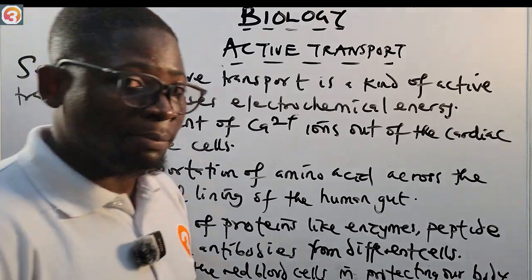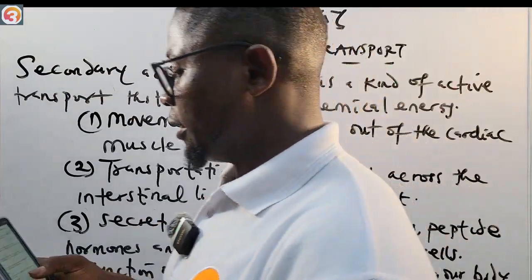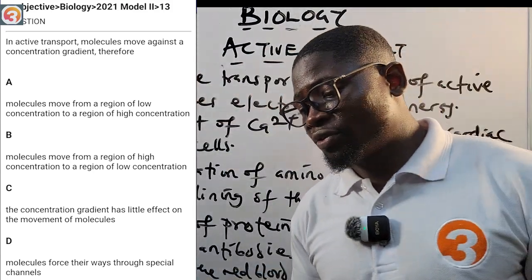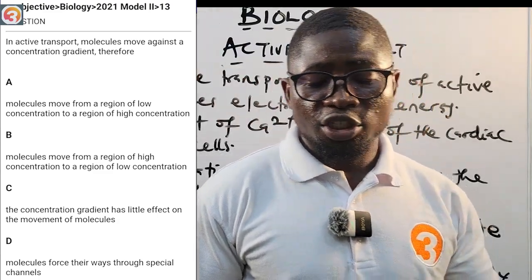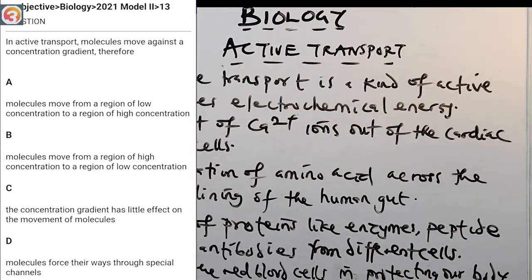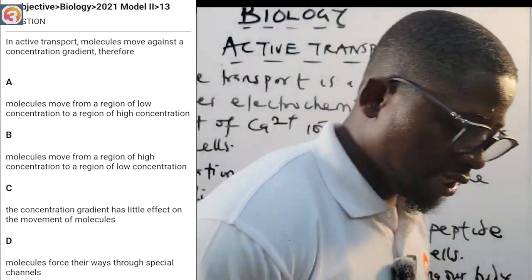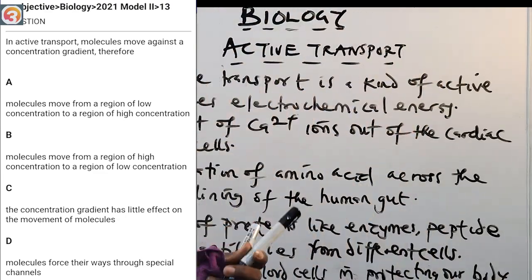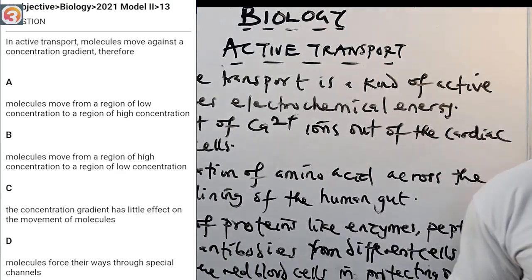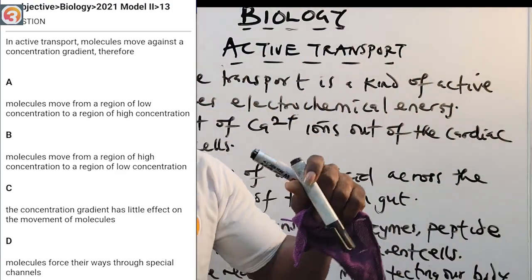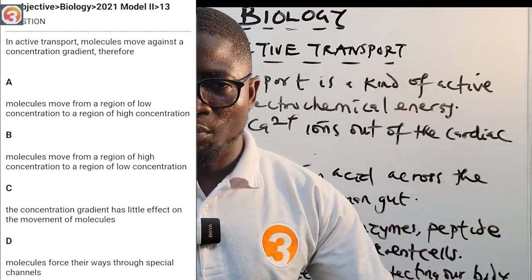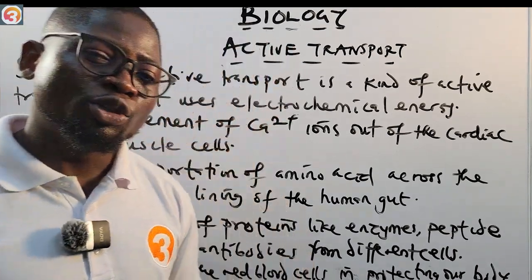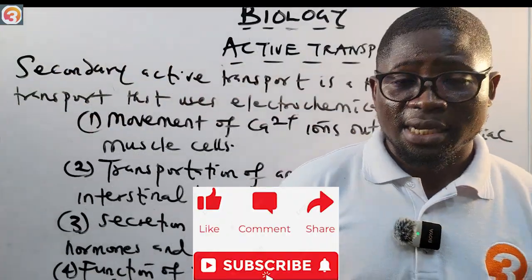Now let's answer the 2021 JAMB question number 13. The question is shown on screen. The correct answer is A: molecules move from a region of low concentration to a region of high concentration against the concentration gradient. That is active transport. That's where we stop for today. In the next class, I'm going to cover nutrition. Thank you for watching and see you there.